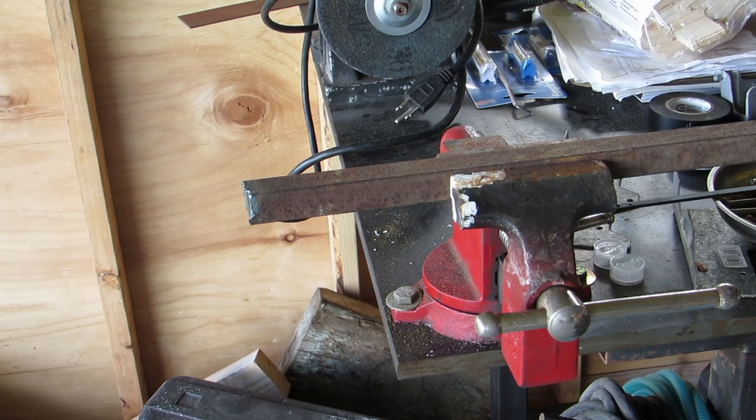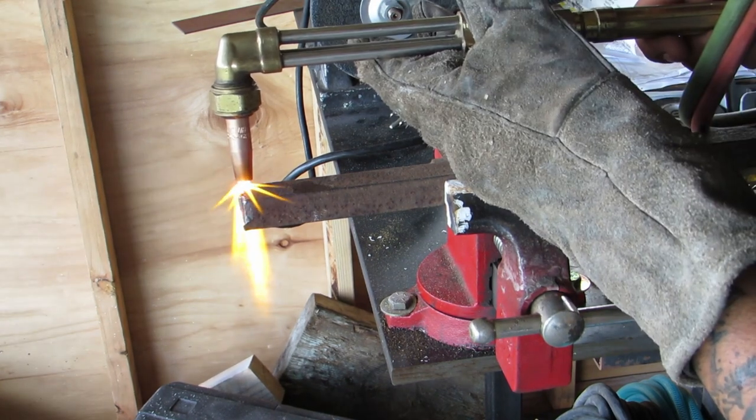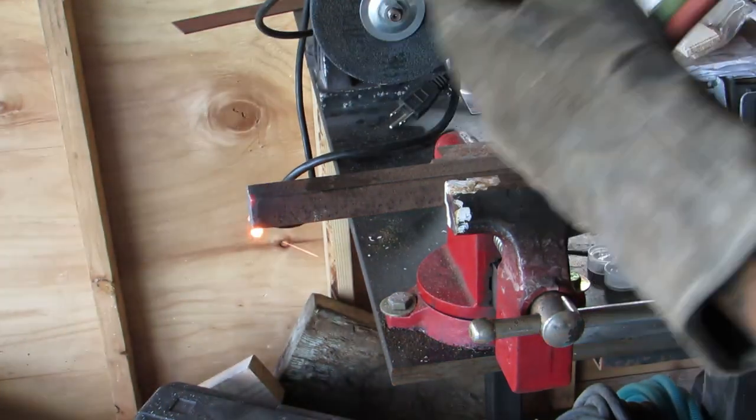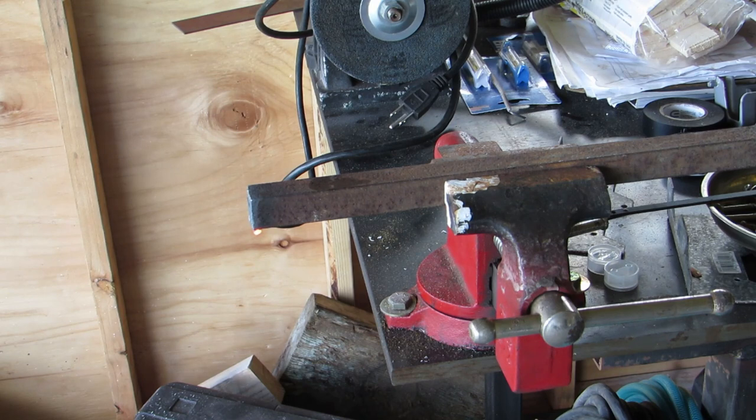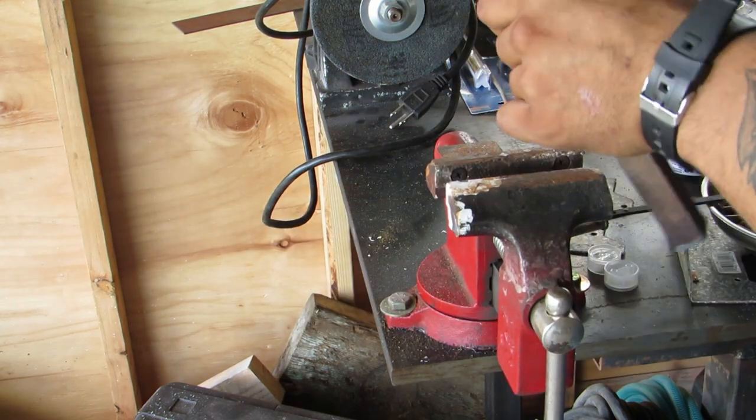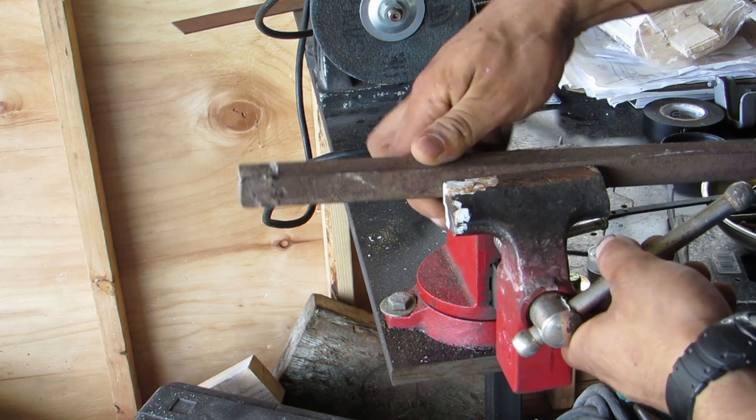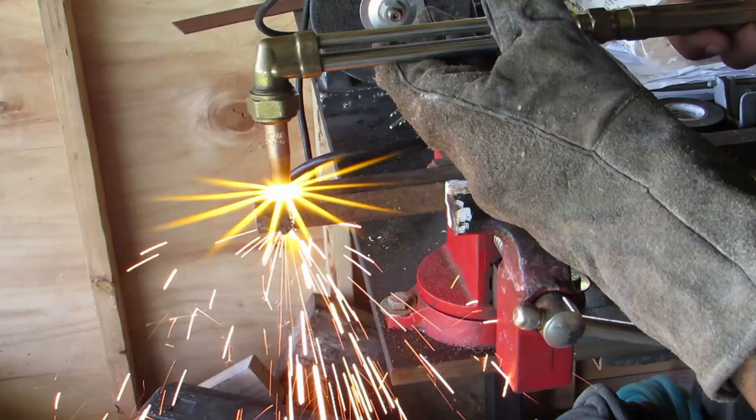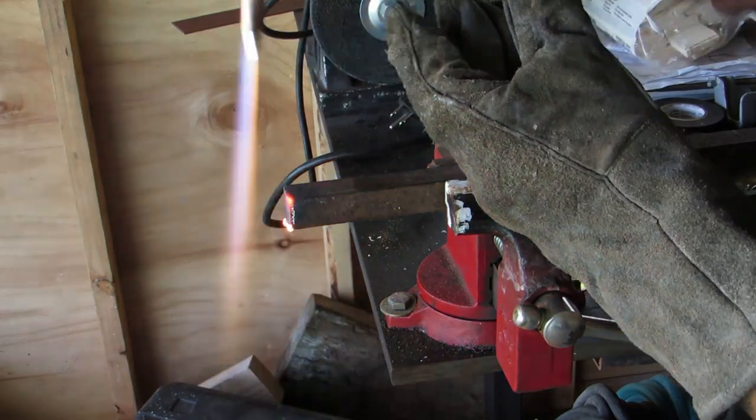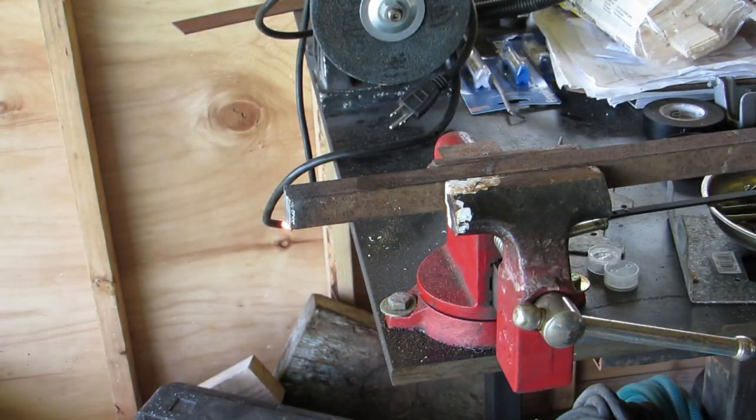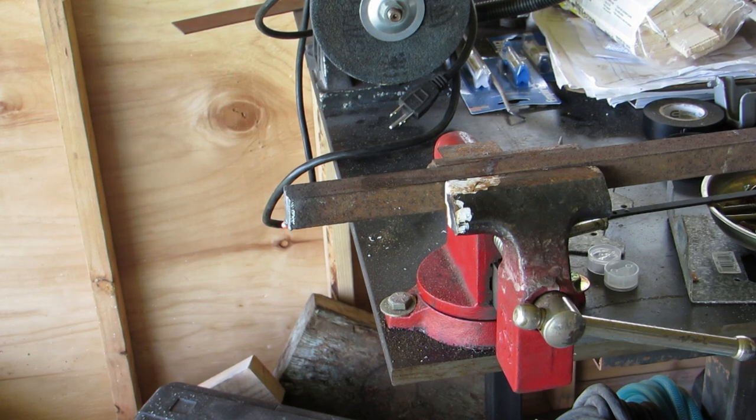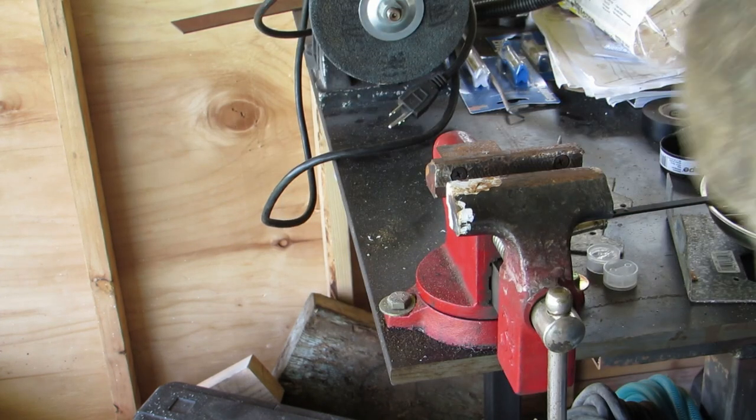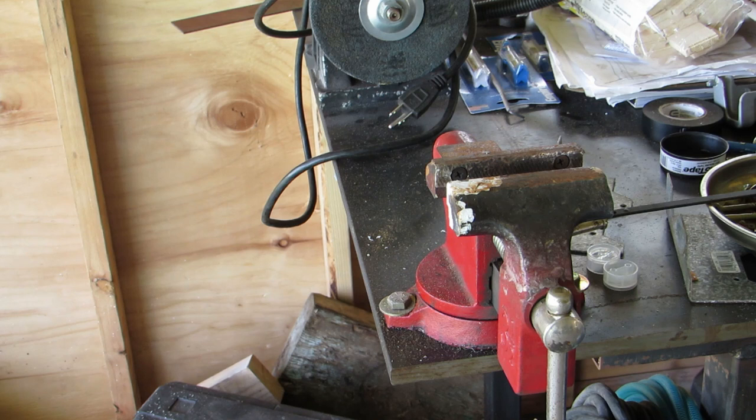First things first, let's straighten up this piece of square stock. God, this propane takes forever. It's a number two or a two GPN tip. I find that pretty versatile. You can still get some tight turns on it and do some thicker stuff.